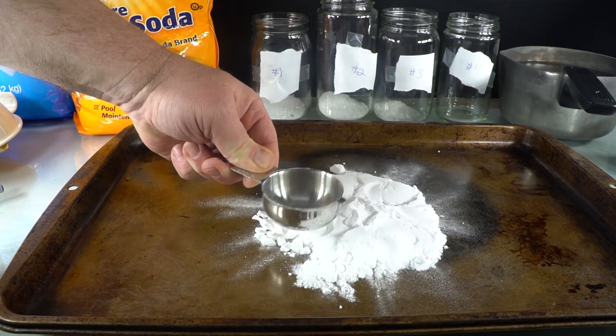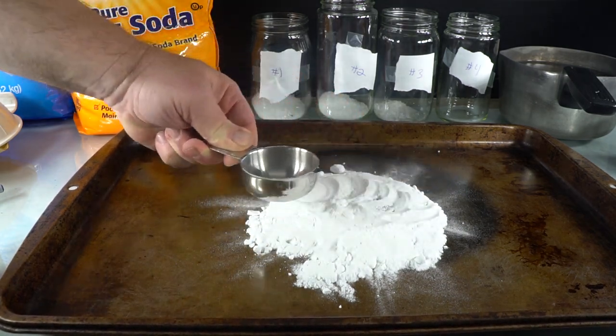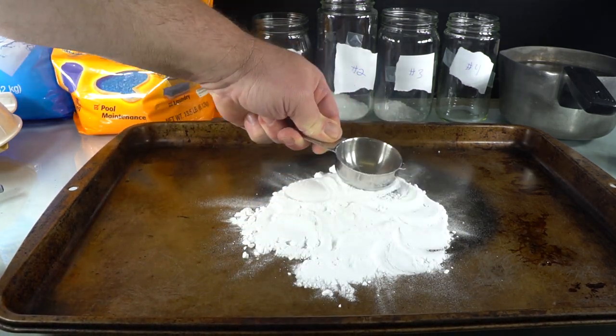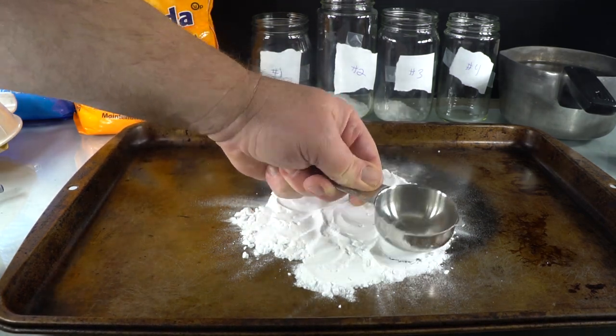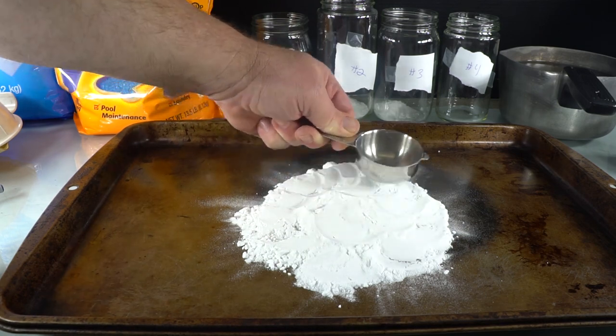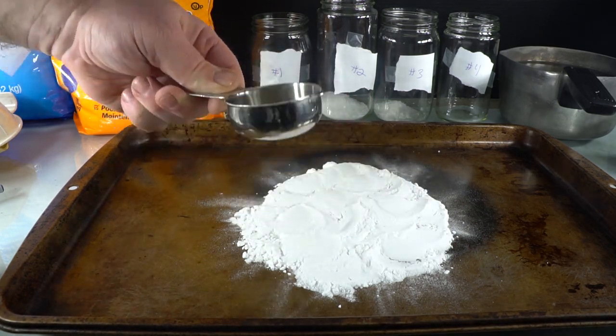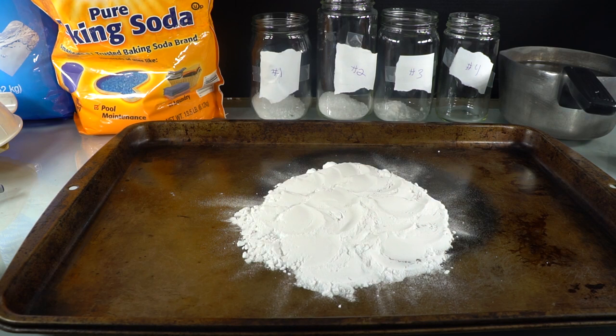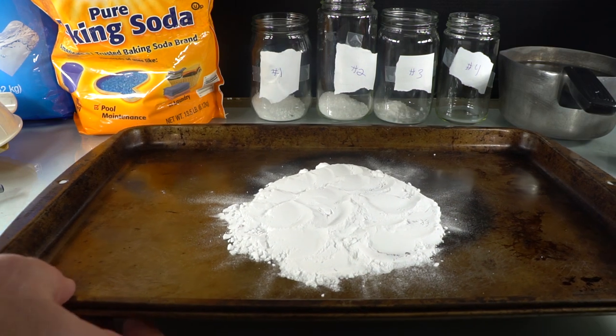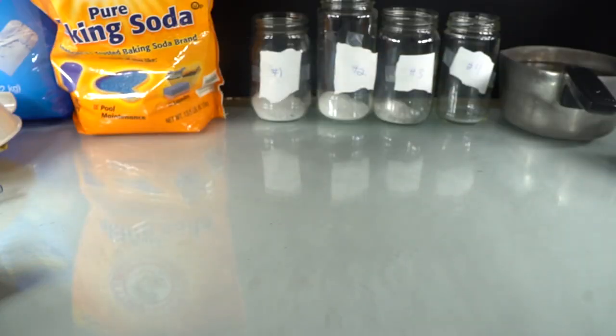This is a decomposition reaction. The sodium bicarbonate decomposes in the oven into sodium carbonate, water, and carbon dioxide. Sodium carbonate is also known as washing soda because it is an important component in laundry detergent. It helps keep our clothes stain-free.